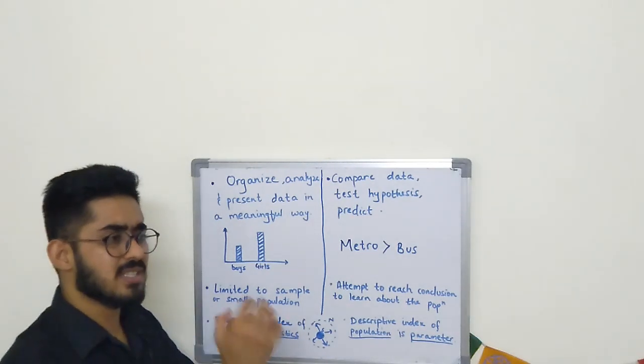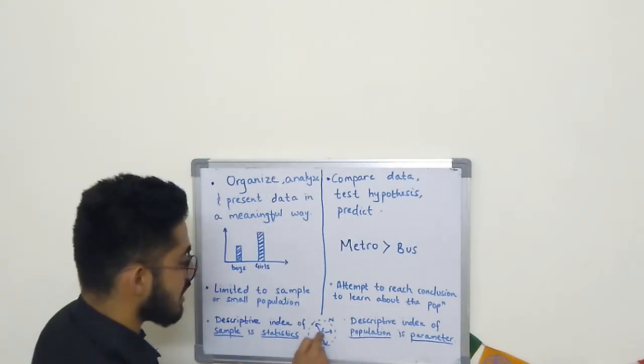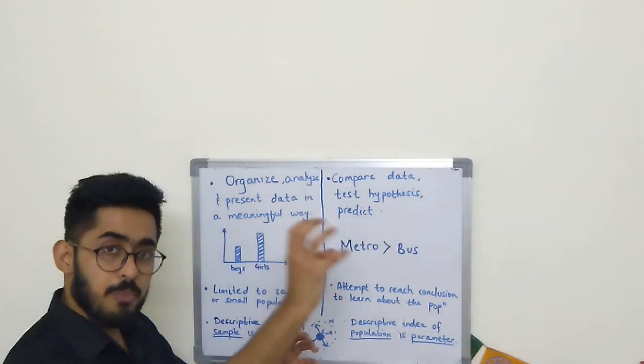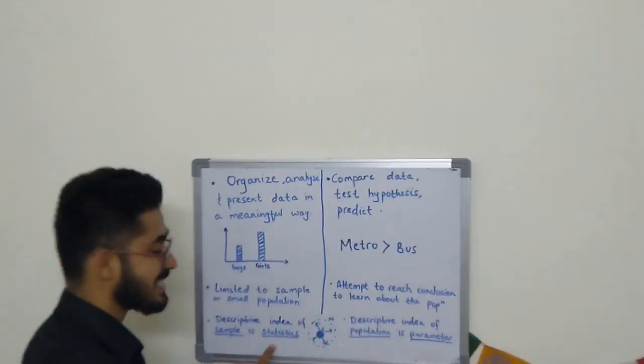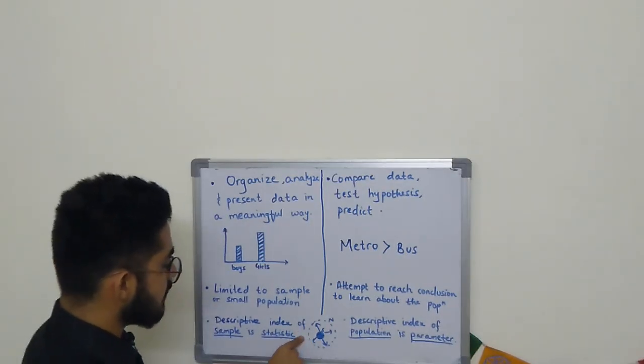The characteristics and information which we present from our sample—these properties are called statistics.